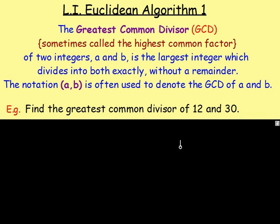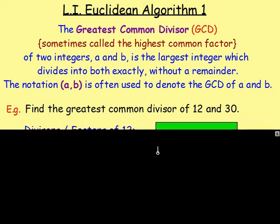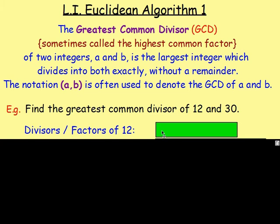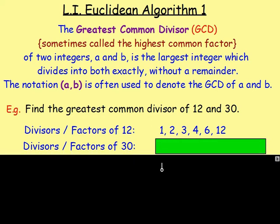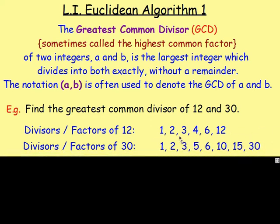Let's take an example that you would have done years ago. Let's say we wanted to find the highest common factor or greatest common divisor of both 12 and 30. The first thing you probably did was think about the factors of 12. The factors of 12: 1 times 12, 2 times 6, 3 times 4. This is everything you can divide 12 by that does not leave a remainder. You would also get the factors of 30: 1 times 30, 2 times 15, 3 times 10, 5 times 6. The greatest common divisor would be the highest number that is in them both, which is 6.